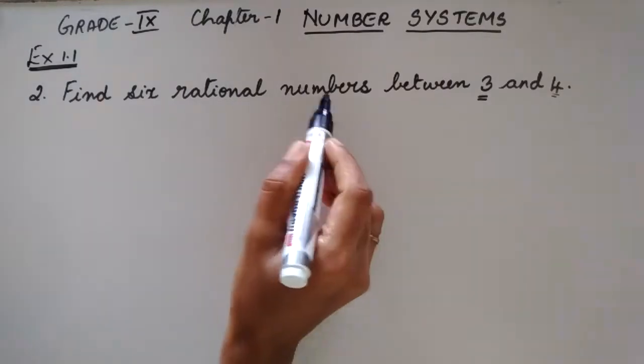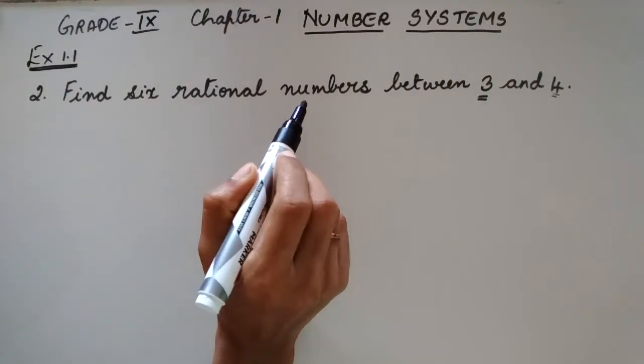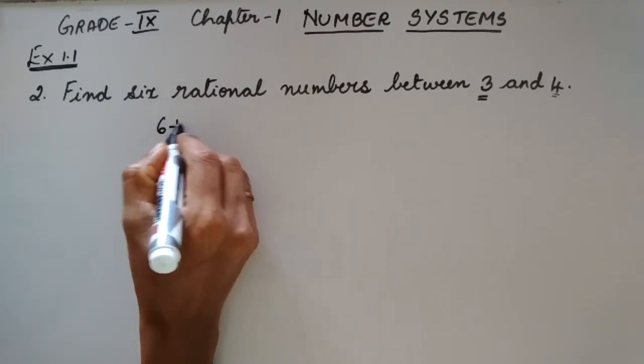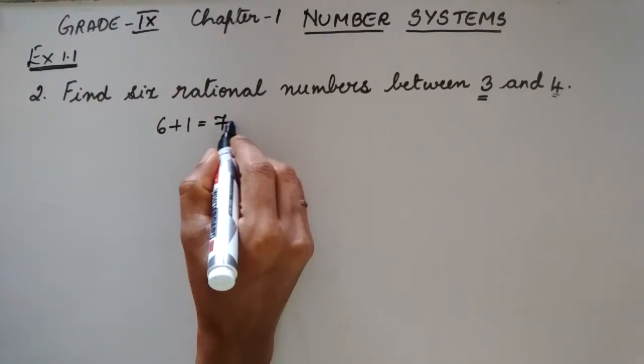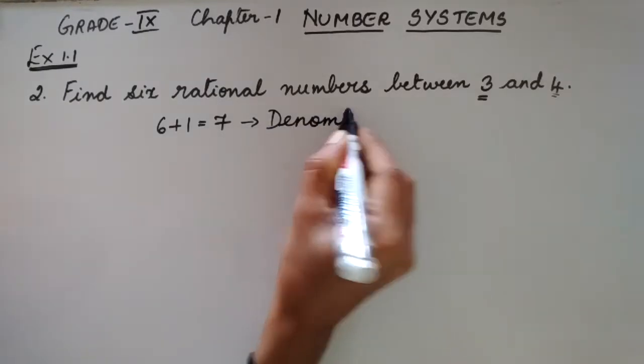Find 6 rational numbers between 3 and 4. We need to add 1 to this 6. So it becomes 6 plus 1 is equal to 7. And this will be the denominator. 7 will be the denominator.